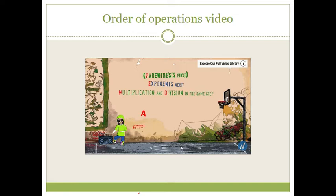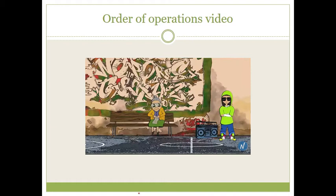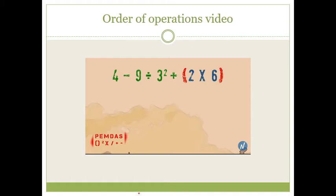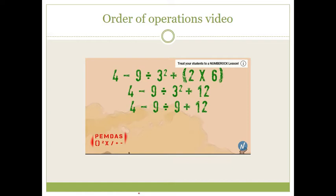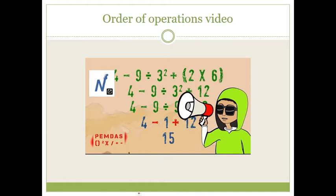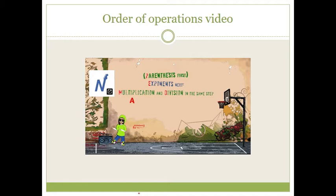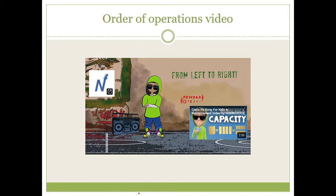Parentheses first: 2 times 6, the product's 12 — put it back in the mix. Exponents next: 3 squared is 9, when you know the tricks it doesn't take much time. Now we divide or multiply — 9 divided by 9 is 1, we're almost done. 4 minus 1 has a difference of 3, when we add the 12 we get 15. Parentheses first, exponents next, multiplication and division in the same step, addition and subtraction — from left to right, first come first serve.